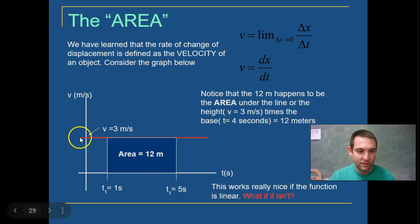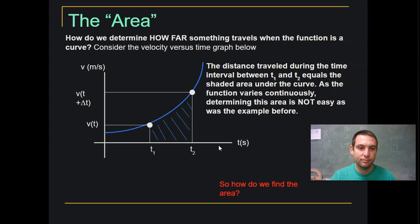We have this rectangle where our velocity is 3 meters per second between times 1 second and 5 seconds. So the area is 12 meters. This works really nicely if the function is linear. But what if it's not?